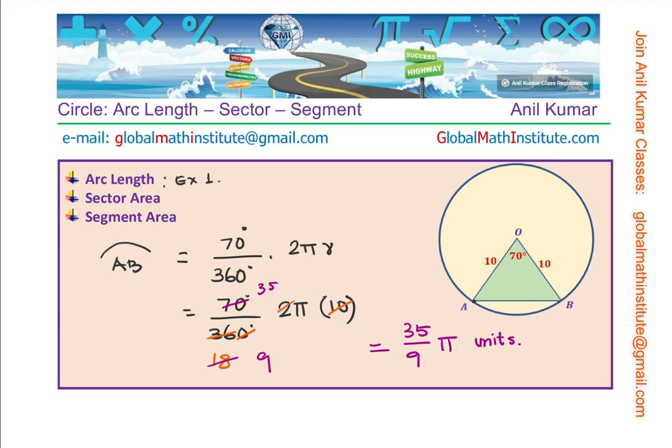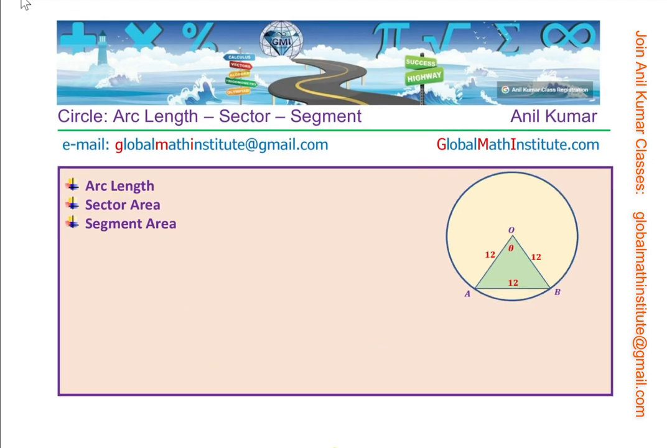So the exact value here will be 35π/9. That is how we find the arc length AB with an angle of 70 degrees at the center. Now let's do part B. Here we are given a triangle whose sides are 12 each.